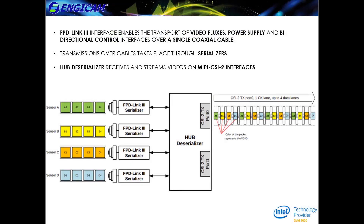FPLink3 is the third version of the open standard for flat panel display transmission. The project focus is to serialize data from a multimedia source and to transmit them over a single line. This type of solution protects the system against electromagnetic interferences and allows reduction of its wires.